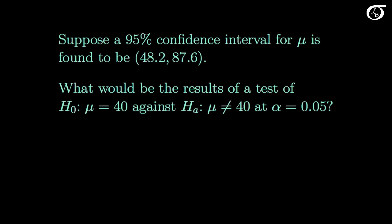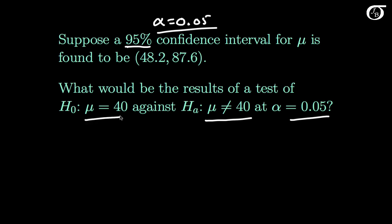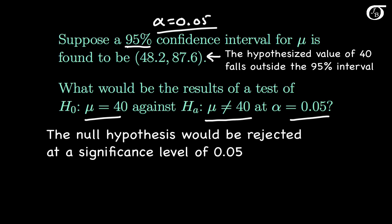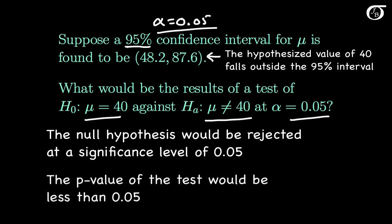Suppose a 95% confidence interval for mu is found to be 48.2 to 87.6. What would be the results of a test of the null hypothesis that mu is equal to 40, against a two-sided alternative at an alpha level of 0.05? A 95% confidence interval corresponds to an alpha level of 0.05, so the alpha levels are the same and the alternative is two-sided — that direct relationship holds here as well. The hypothesized value of 40 falls outside of this 95% confidence interval, so we would reject the null hypothesis at an alpha level of 0.05, which means the p-value is less than 0.05.